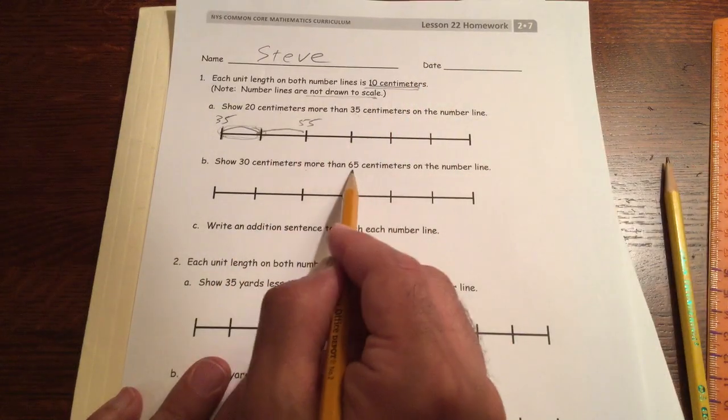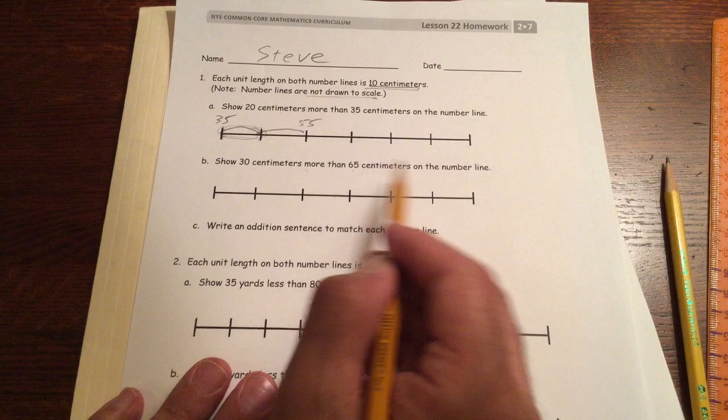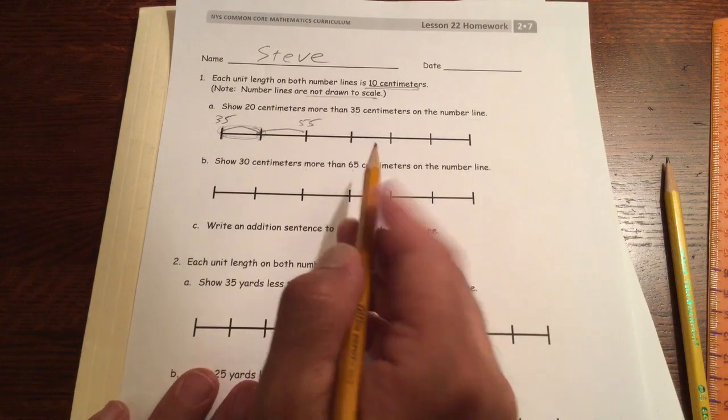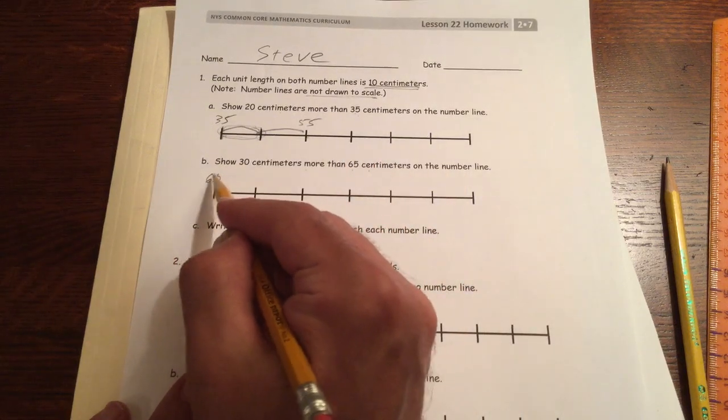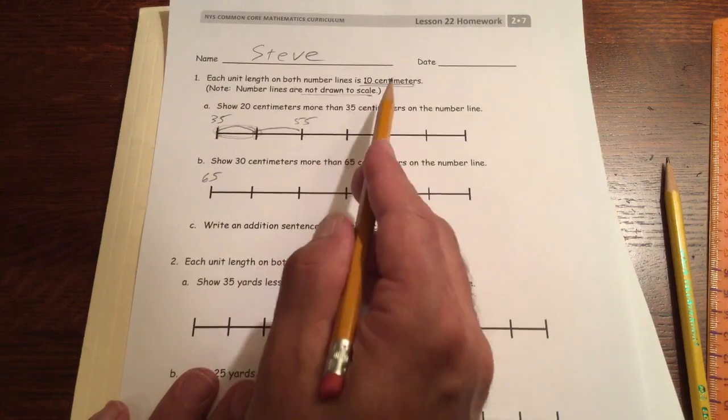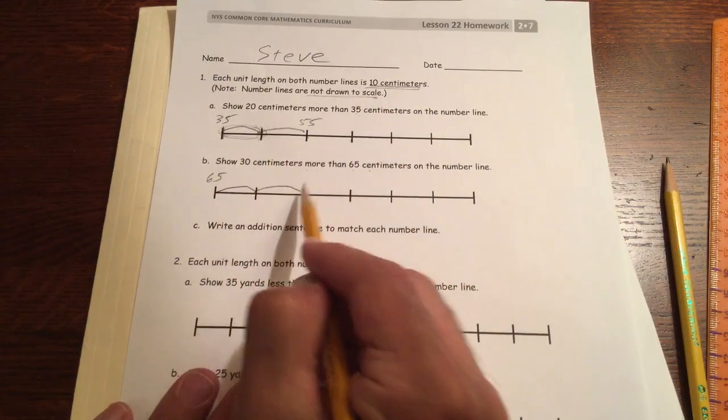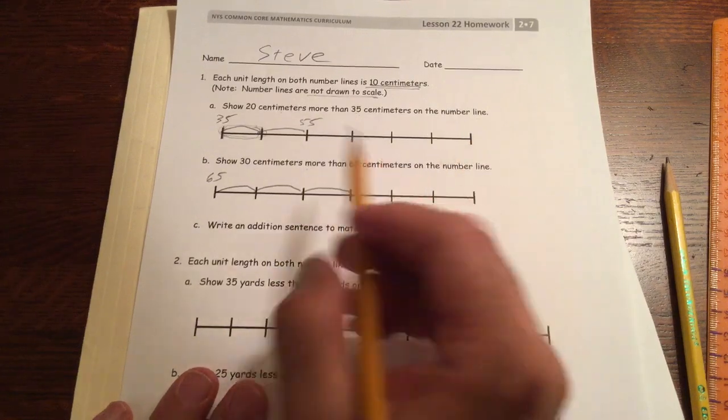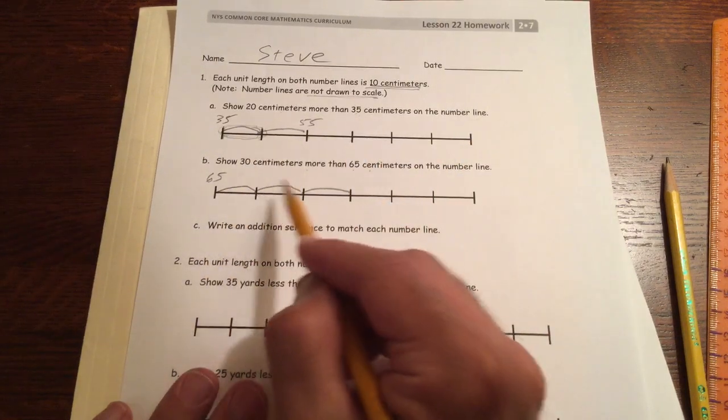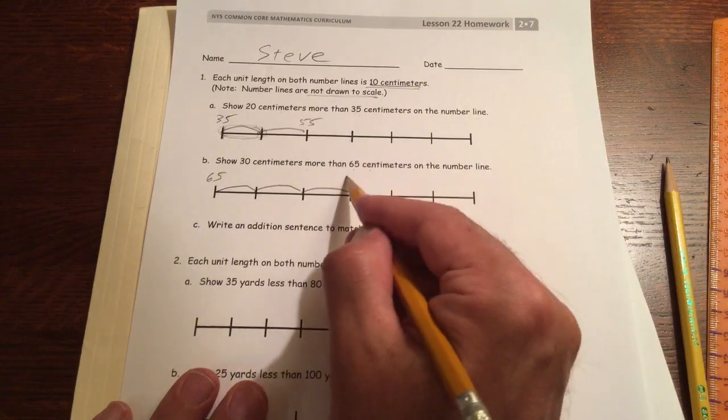Show 30 centimeters more than 65 on the number line. So we're going to start at 65, and we want 30 more, counting by 10. 10, 20. That's 30 more. 75, 85, 95.